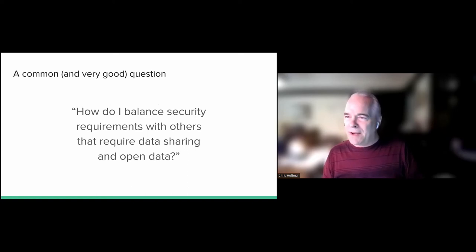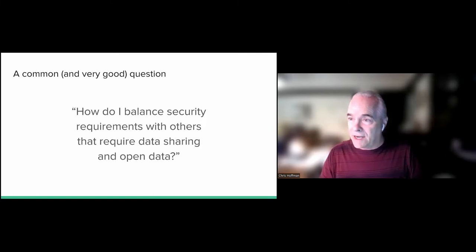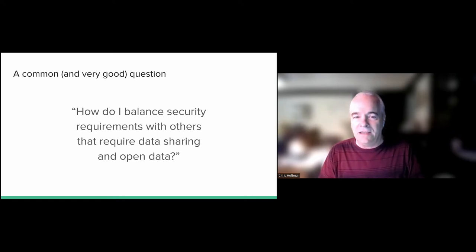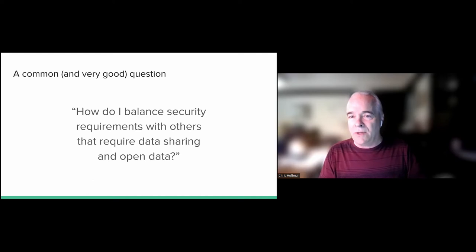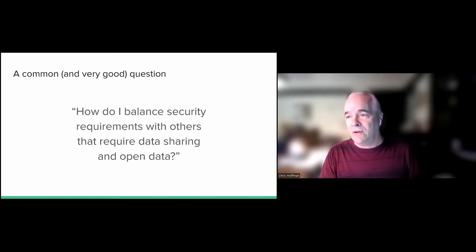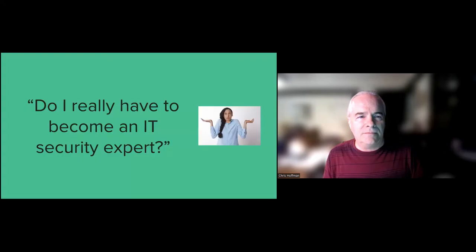Combine that with pressures on researchers to share data and have open data, and there's actually a conflict. Researchers ask this question all the time: how do I balance these different requirements? Generally, the requirements for security or protecting subjects will overrule the requirements to share data. But that doesn't mean you can't share data — you just have to be aware of what data you can share, whether it's de-identified or at an aggregate level, and what data you're not allowed to share.